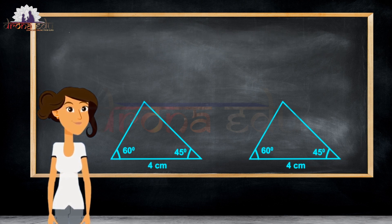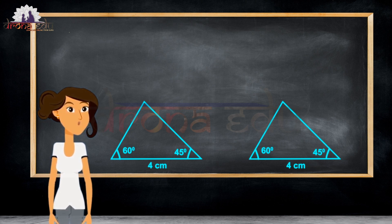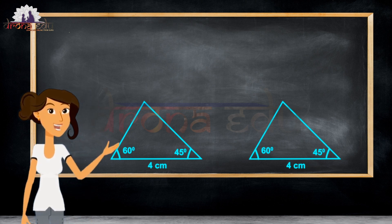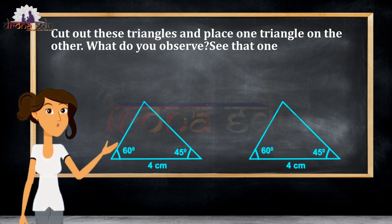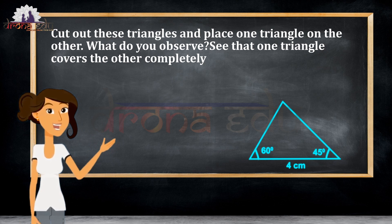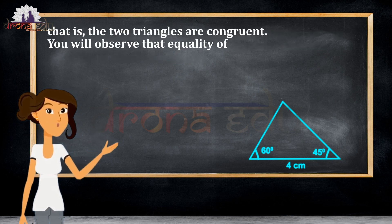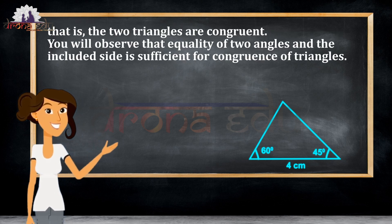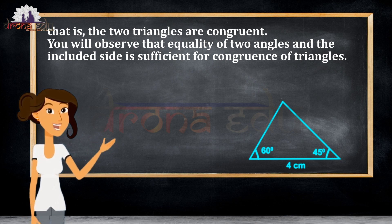After constructing, we get two triangles like this. Now let us cut out this triangle and place one triangle on the other. What do you observe? You can observe that one triangle is covering the other completely. From this, I can say that the two triangles are congruent.